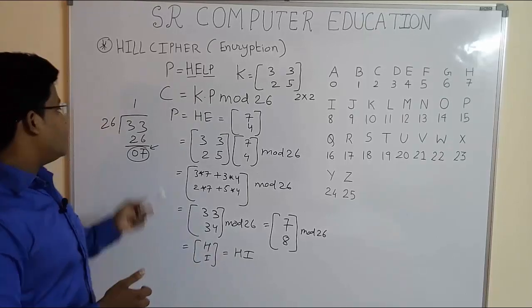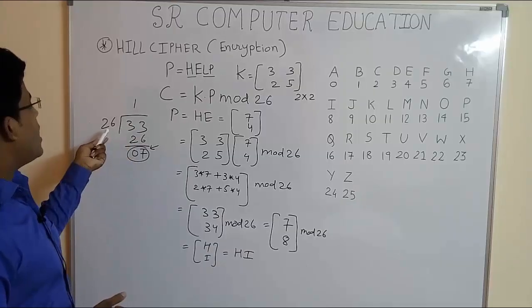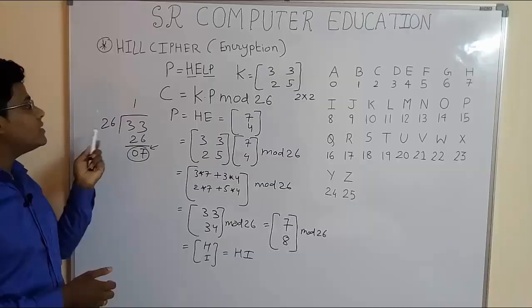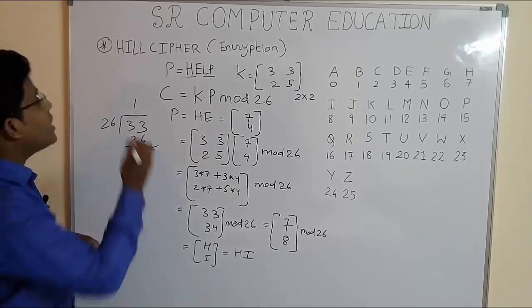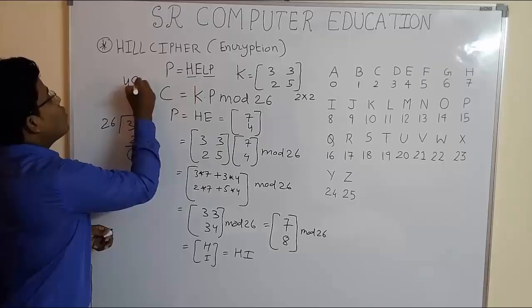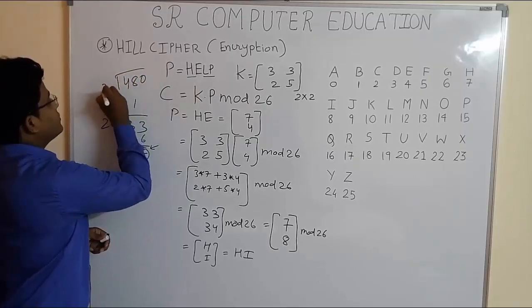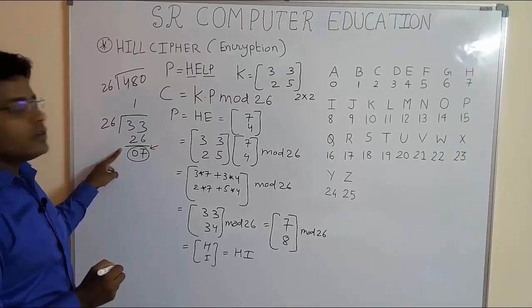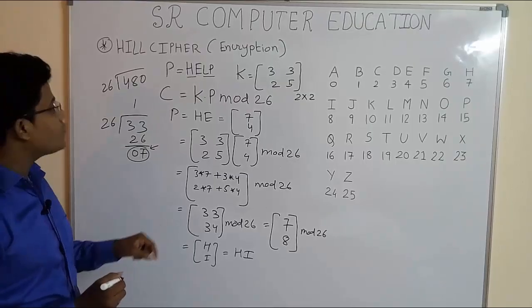Students, here the number is 33 and the mod operation. We have to do 33 mod 26. So it is easy. But suppose when you get more big numbers, for example, 480 mod 26. Here you can follow this operation and whatever remainder you get, that is your final answer.